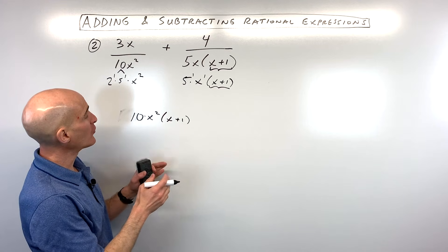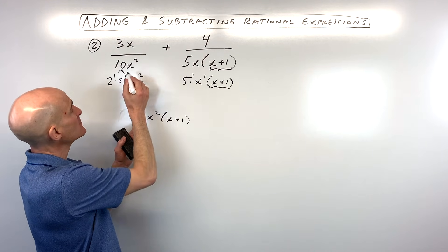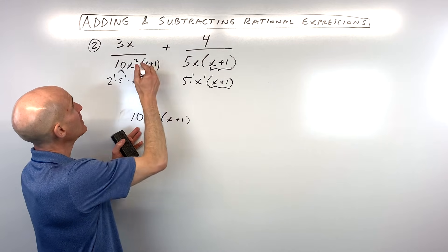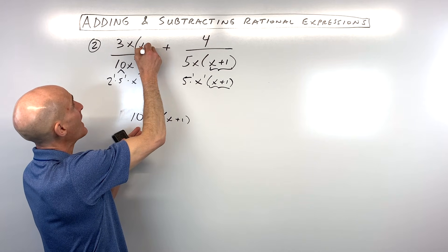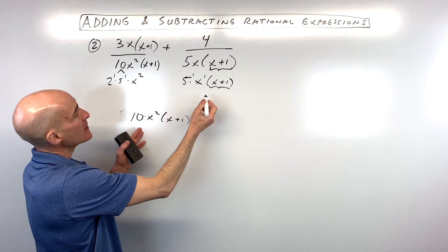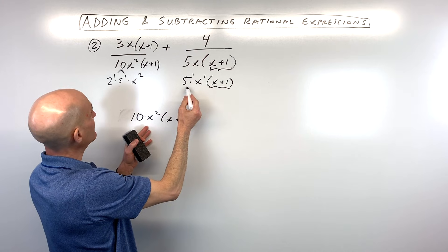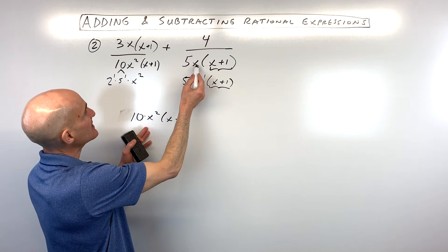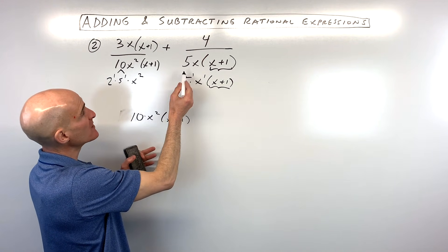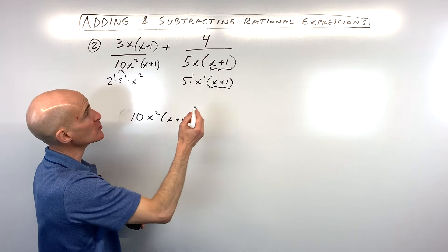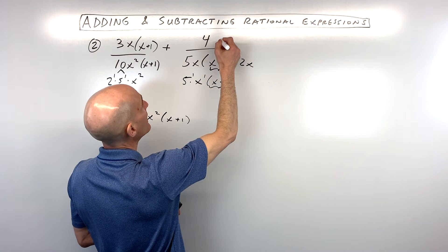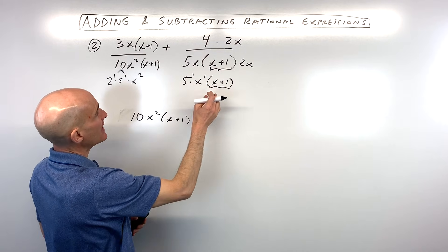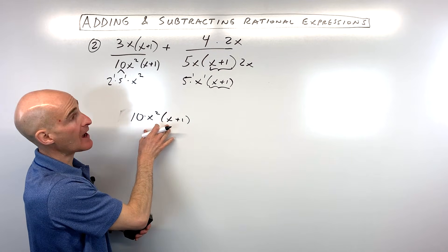Let's multiply by what's missing. The first fraction is missing x plus 1, so multiply numerator and denominator by x plus 1. The second fraction has a 5 but not a 2, and has x but needs x squared, so it's missing another x and another 2. We multiply the numerator and denominator by 2x. That gives us the common denominator 10x squared times x plus 1.